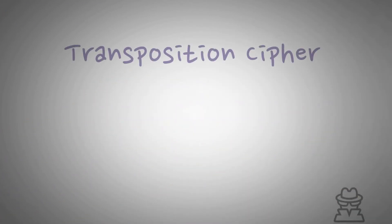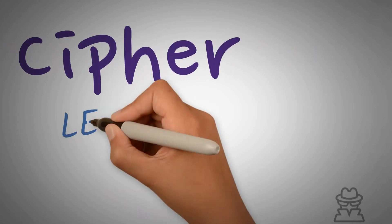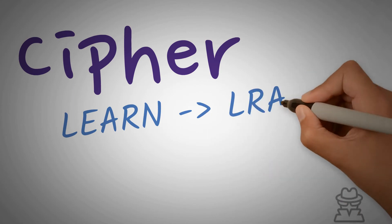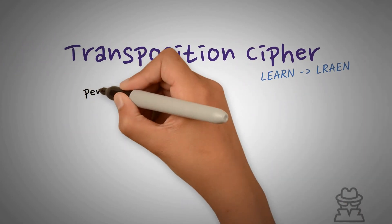A transposition cipher is created by rearranging the letters of the plaintext in a way that will make the ciphertext appear to be well-encrypted. This is also known as permutation.